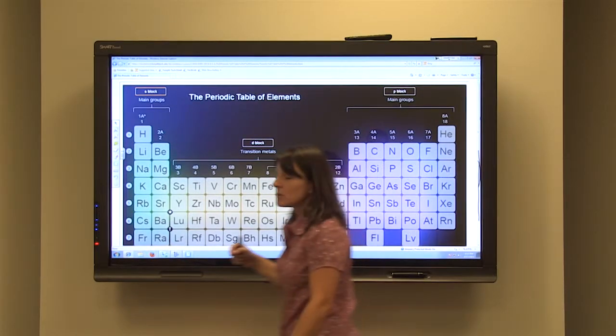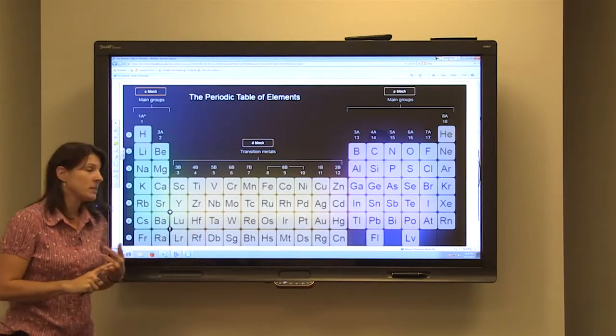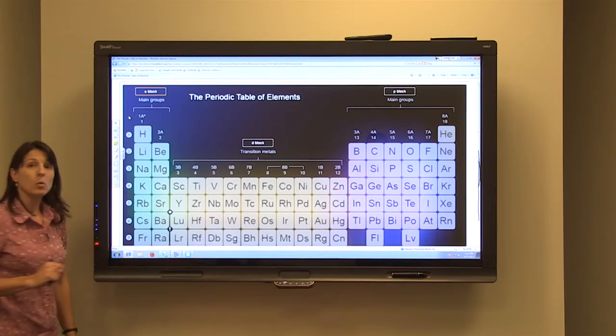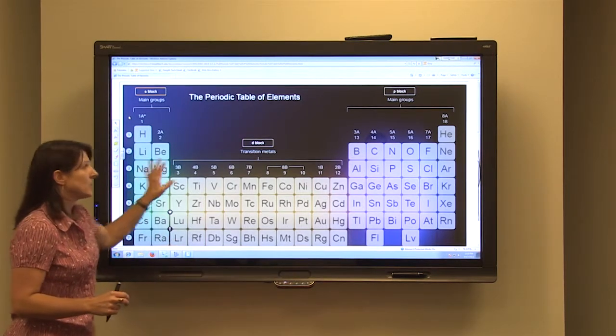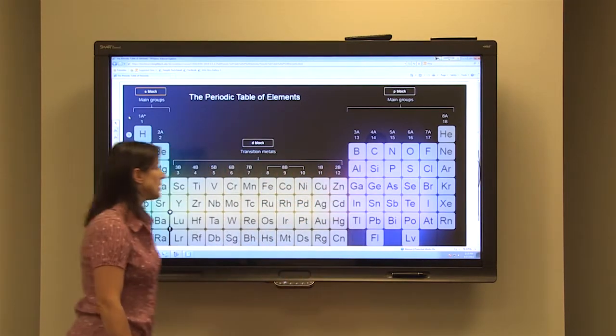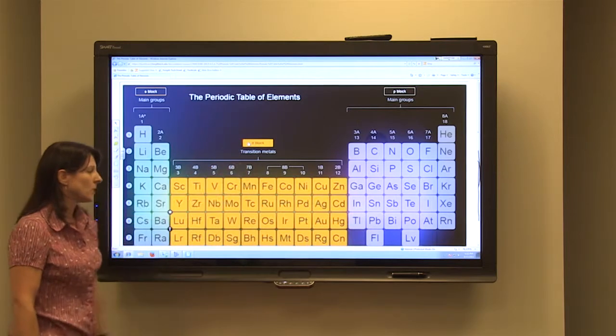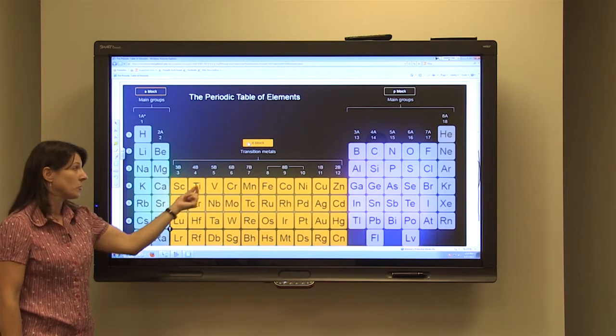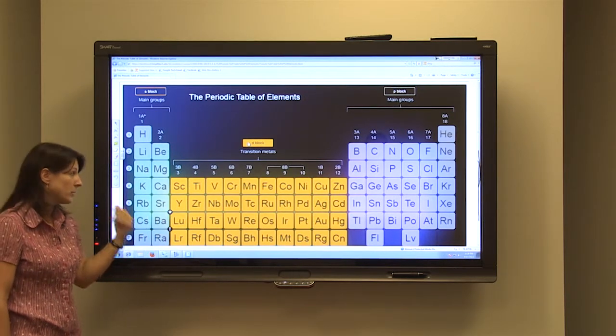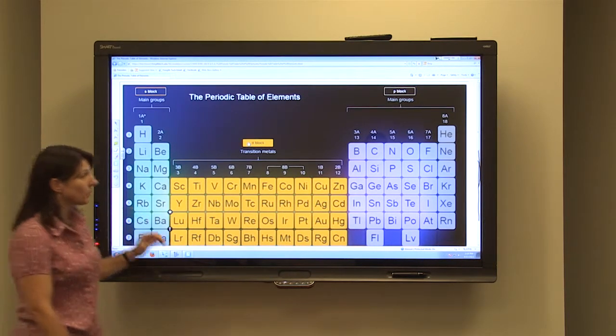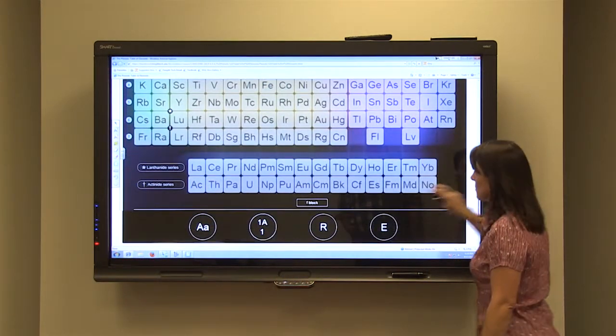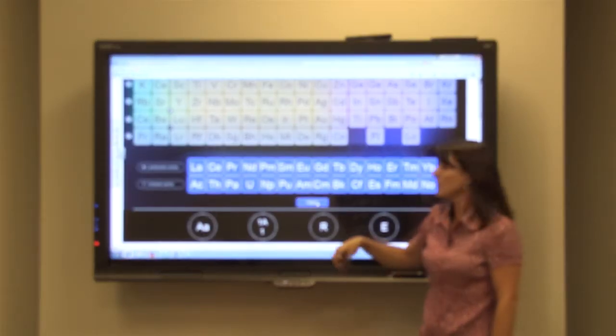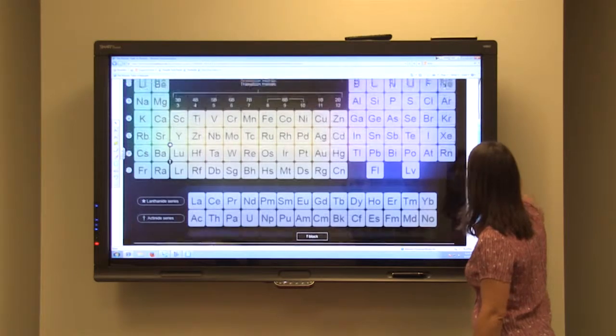So we are going to arrange our electrons by energy level and by sub-level. The period numbers on the side of the periodic table indicate what energy level you're on for the S and the P-sub-levels. The D-sub-levels, the D-block elements, the period number does not correspond to their energy level. Their energy level is going to be one less than the period number. And for the F-group, their energy level is actually going to be two levels lower than what the period number is.